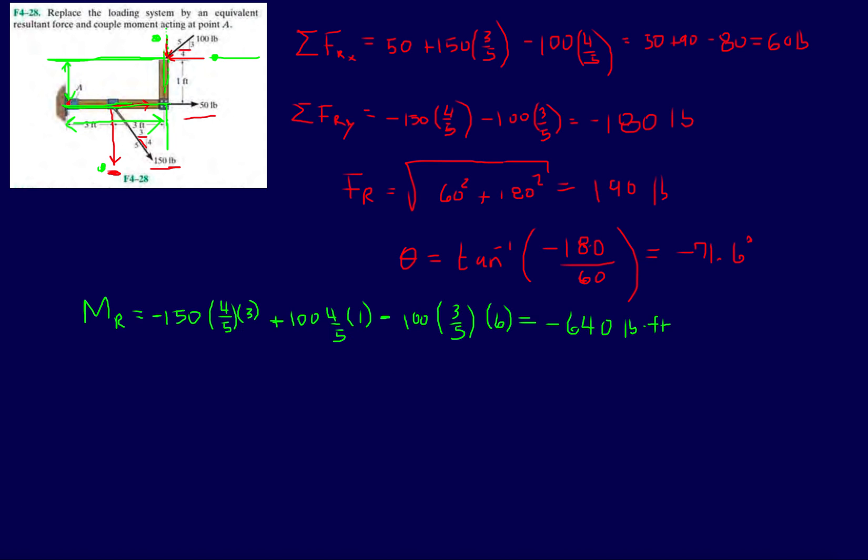So now if we were to redraw this whole structure, let's draw something. This is our structure, this L shape. This is point A. Now I have a clockwise torque at that point A, so I have 640 pound-feet at that location.